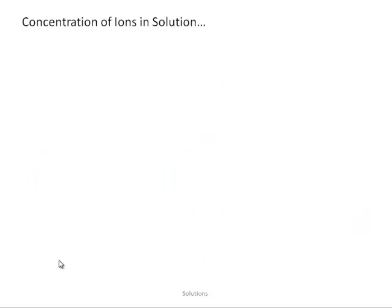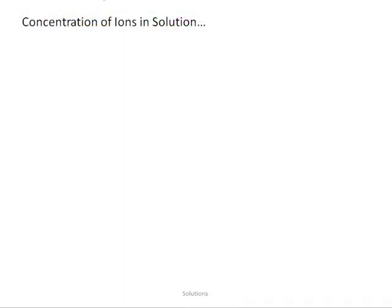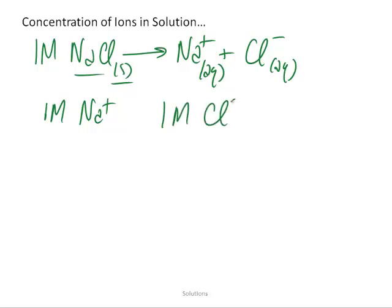One important aspect that we have to consider is the concentration of solutions because of this new dissociation process that we're discussing. If we say that we have a one molar sodium chloride solution, what that really means is that sodium chloride is going to dissociate into sodium and chloride aqueous ions. So we really don't have a one molar sodium chloride solution. We have a one molar sodium cation solution and a one molar chloride ion solution.